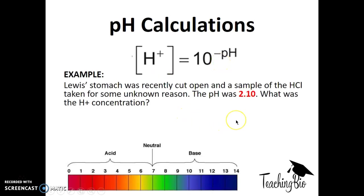Here's another example question to try. Lewis's stomach was cut open and a sample of hydrochloric acid was taken. The pH was 2.10. What was the H+ concentration? We have the pH, so we sub this into the equation. H+ equals 10 to the power of minus 2.10. That gives 0.079, which rounds to 0.08. That's the same information we got in the previous question, so this works.